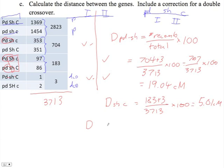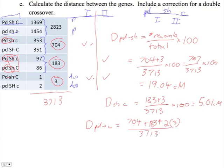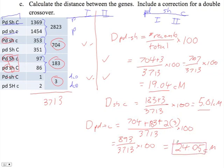It's 5.01 centimorgans for REGION 2. Here's the one some students get tricked up on — the distance from PD all the way to C, which includes the locus in the middle. We need to account for the double crossovers. The formula is 704 plus 183 plus 2 times 3 for the double crossovers, over 3,713, times 100. That gives 893 over 3,713, times 100, which equals 24.05 centimorgans. We check our work: 19.04 plus 5.01 equals 24.05. We know we did this right. If you don't see agreement between those values, you made a mistake.